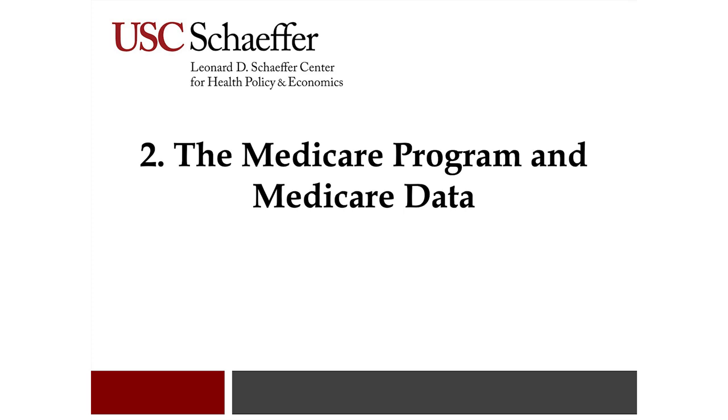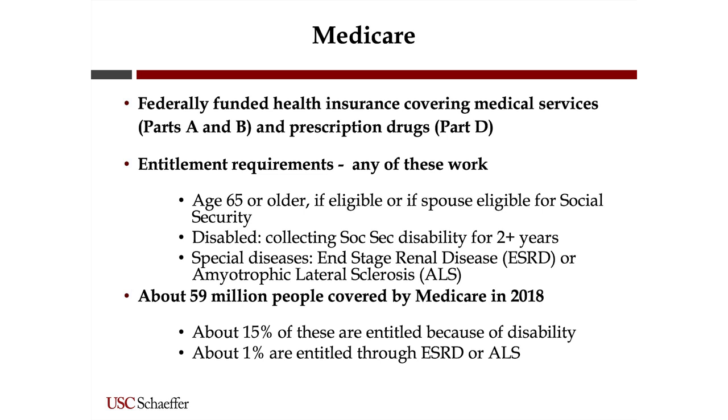Now we're going to talk about Medicare. It's a federally funded health insurance program covering medical services — Parts A and B — and prescription drugs, which is called Part D. The entitlement requirements include: 65 and older if eligible or if your spouse is eligible for Social Security; disabled individuals who've had Social Security disability for two years; and special diseases like end-stage renal disease and ALS, though there's a waiting period before enrollment.